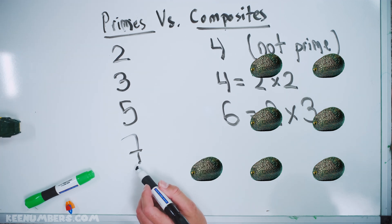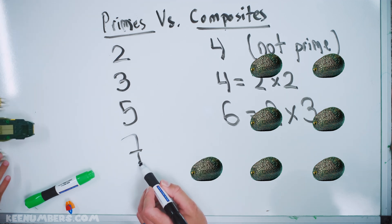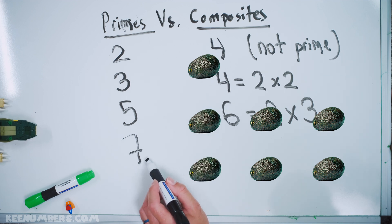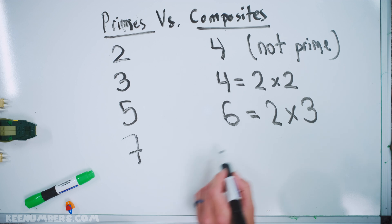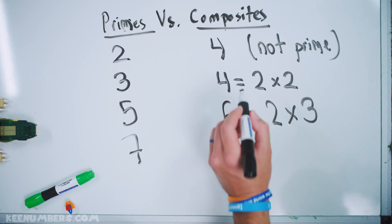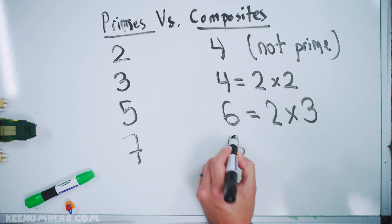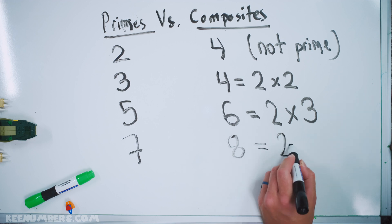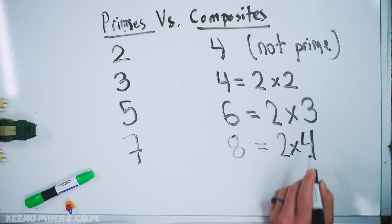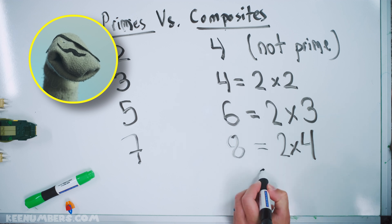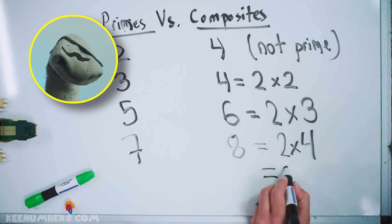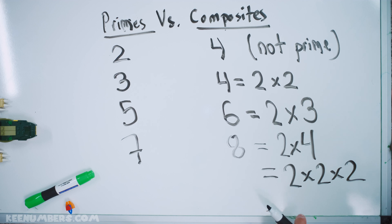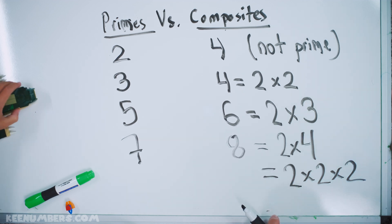Seven is a prime number — you cannot divide it up. It isn't two times three or anything of that nature. It is a prime number. But the next number, eight, is a composite. Because we can break it up into two times four, which is also two times two times two. Eight is a composite number.